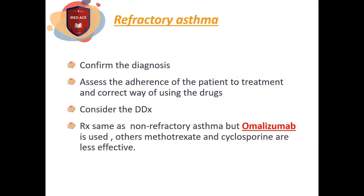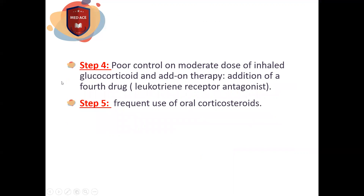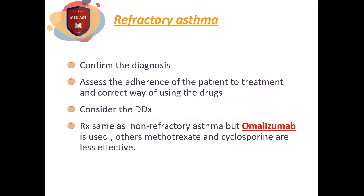For refractory asthma — step five — we use systematic steroids when the patient is still not in control. Before diagnosing refractory asthma, I must be sure the patient does not actually have a differential diagnosis, and that they are using the inhaler correctly. For refractory asthma, I use omalizumab, which is an anti-IgE monoclonal antibody. Methotrexate and cyclosporine are less effective and have many side effects, so the preferred drug is omalizumab.